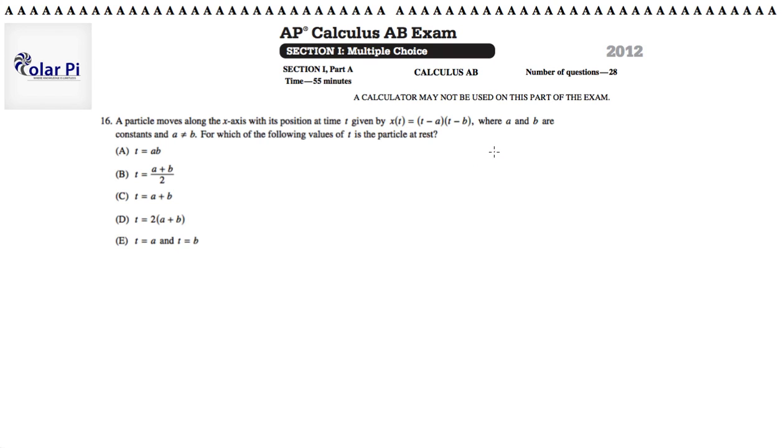a is distinct from b, which means that x of t cannot be written with a repeated root t minus a squared. You can't write it like that. That's what it's saying. So there is that, and then it says, for which of the following values of t is the particle at rest? This is pretty straightforward.